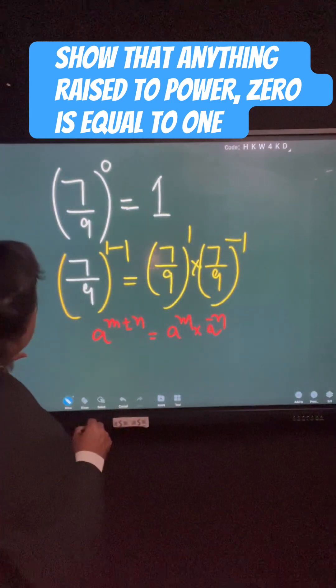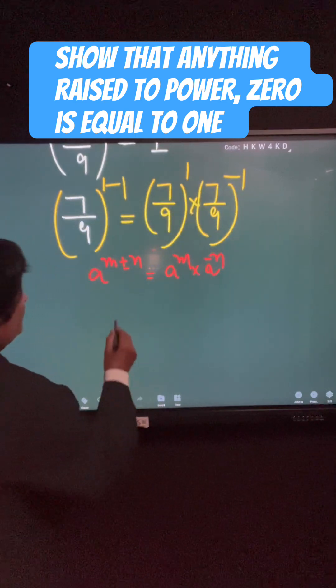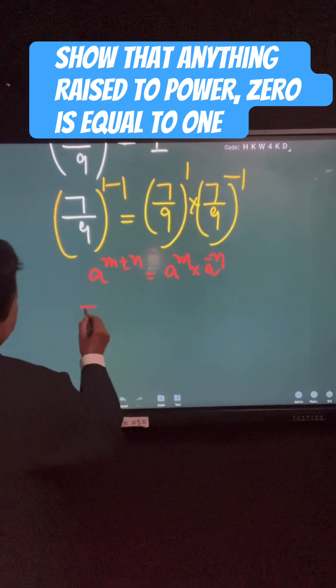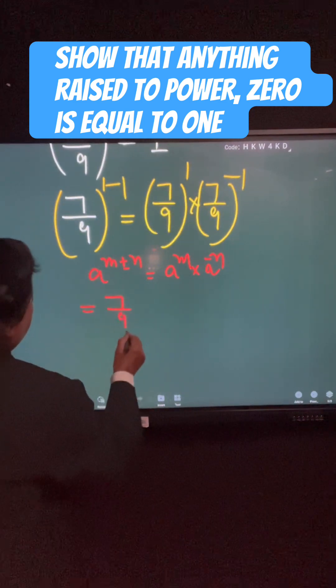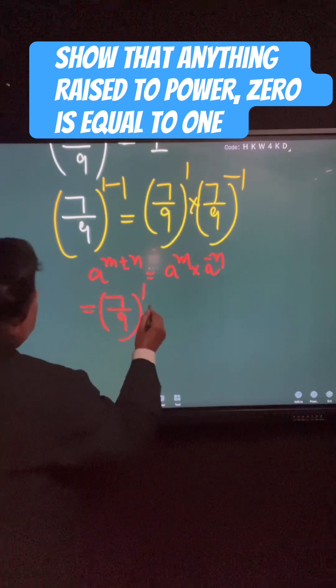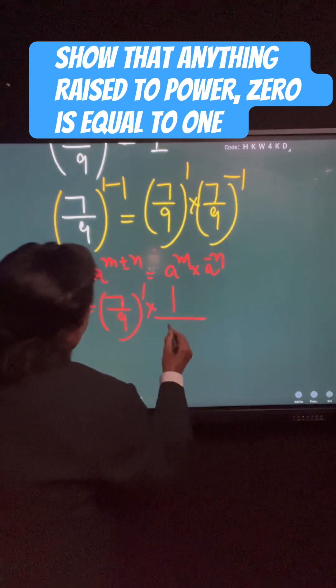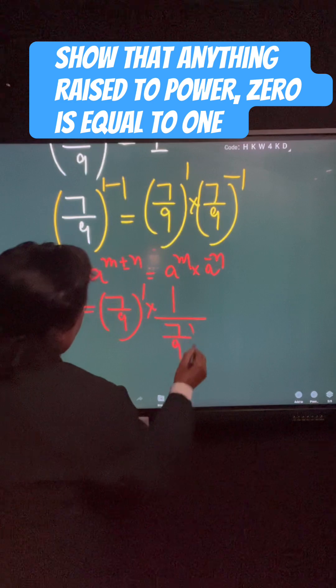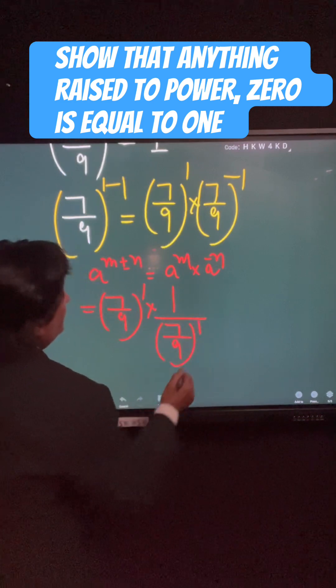Now, dear students, 7 upon 9 to the power minus 1 is equal to 1 upon 7 upon 9 to the power 1.